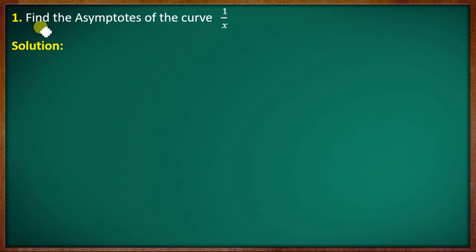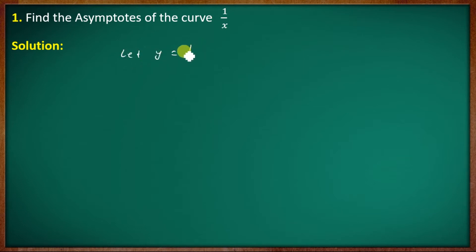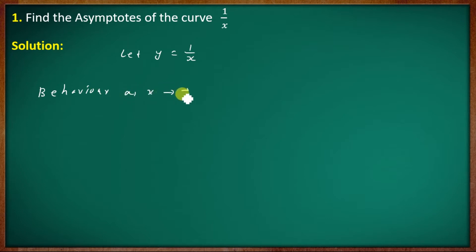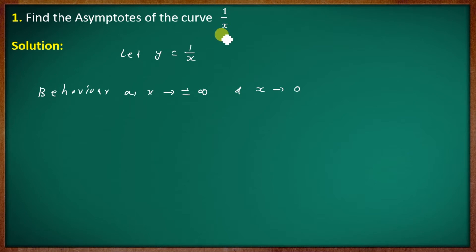First question: find the asymptotes of the curve 1 by x. Let y equal to 1 by x. We need to show the behavior as x tends to plus or minus infinity, and as x tends to 0, where the denominator is 0.